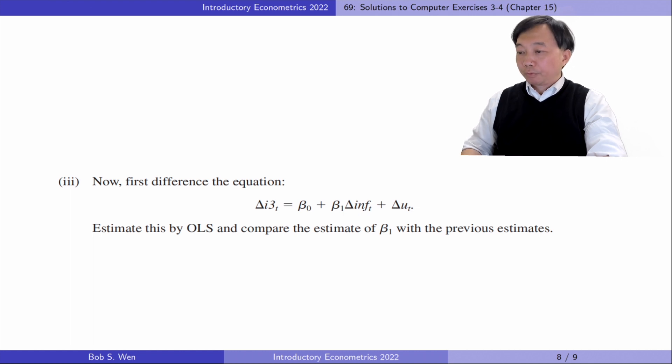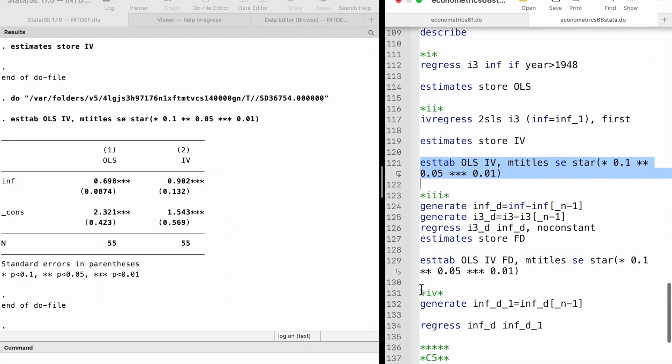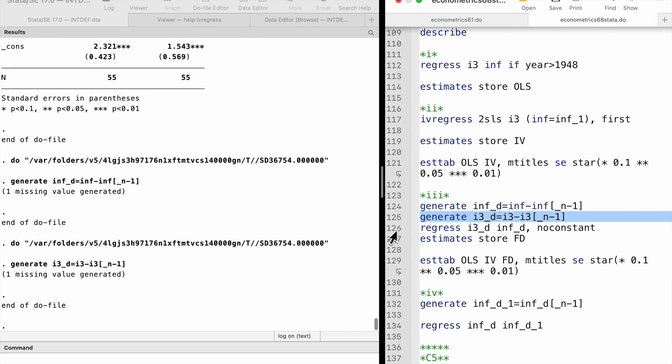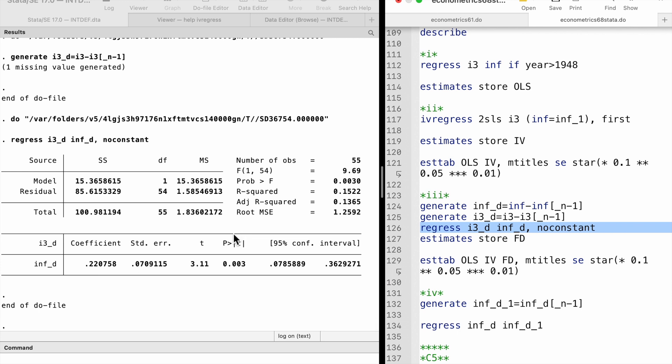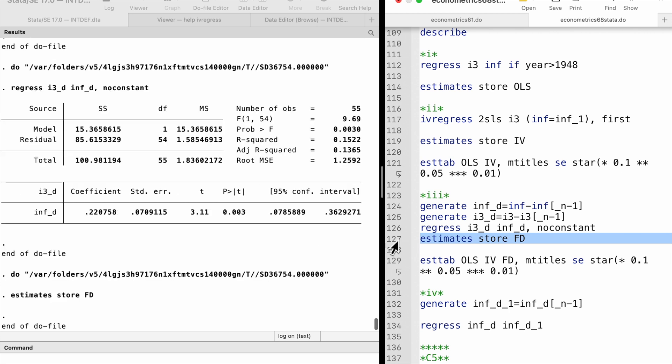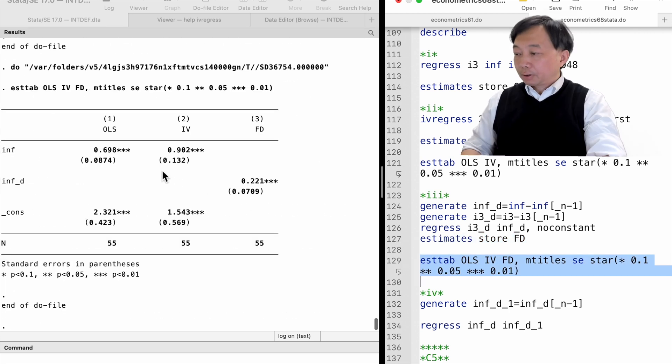In part three, we estimate the model by first differencing method. We compare the estimate with the OLS estimate and the instrumental variables estimate. The first differencing estimate is smaller than the OLS estimate.